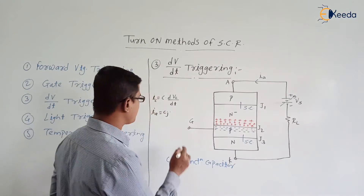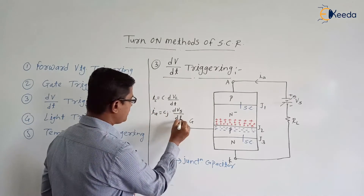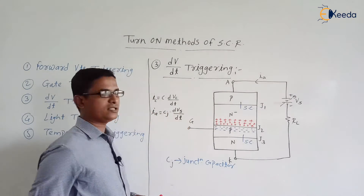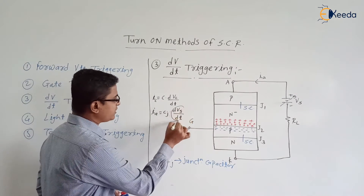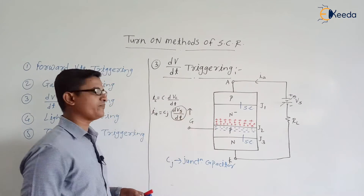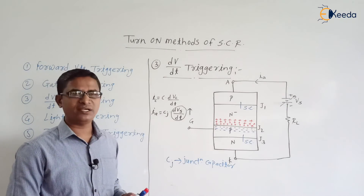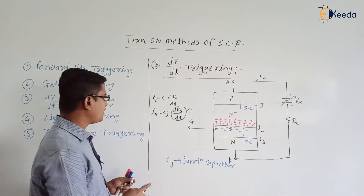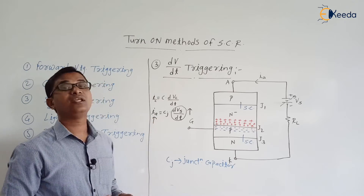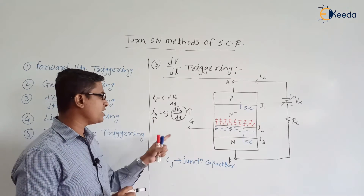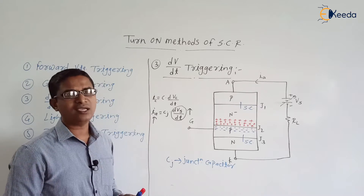The voltage across this layer is the same as Vs, so we write it as dVs/dt. Now, if we increase the value of dVs/dt, it will cause an increase in the value of Ia. Definitely — if the value of dVs/dt increases, Ia will increase.